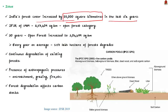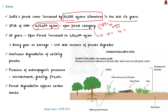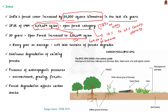As per the State of Forest Report 1989, the country had 2,57,409 square kilometers — that is 7.83% of its geographical area — under the open forest category. Open forest is land with tree canopy density of 10% or more but less than 40%. In 30 years, from 1989 to 2019, this category has increased to 3,04,499 square kilometers, that is 9.26% of total land area. This means every year on average nearly 1.57 lakh hectares of forest are degraded.